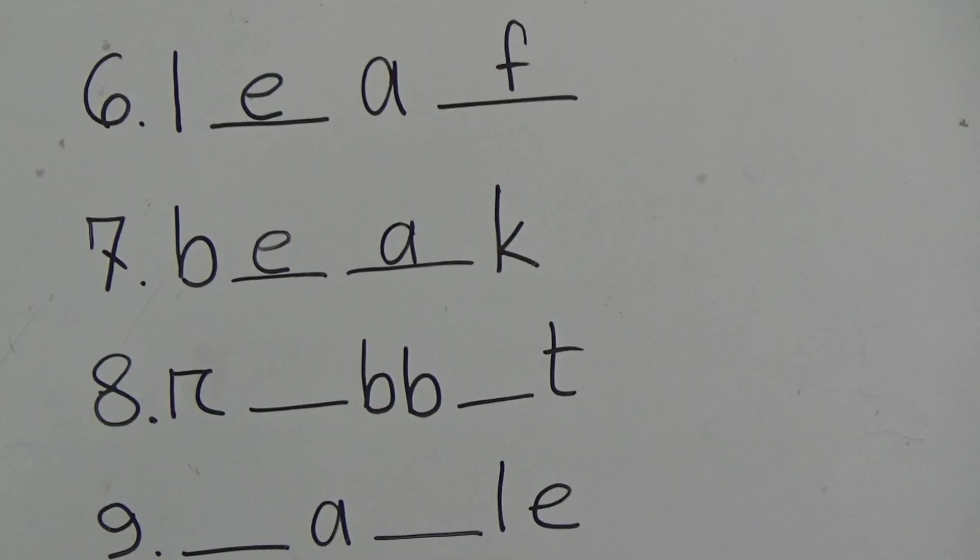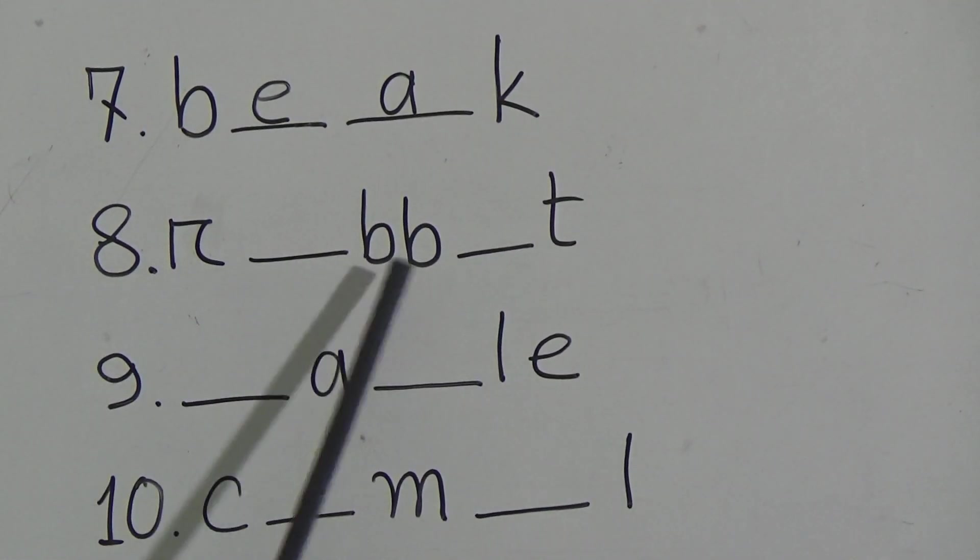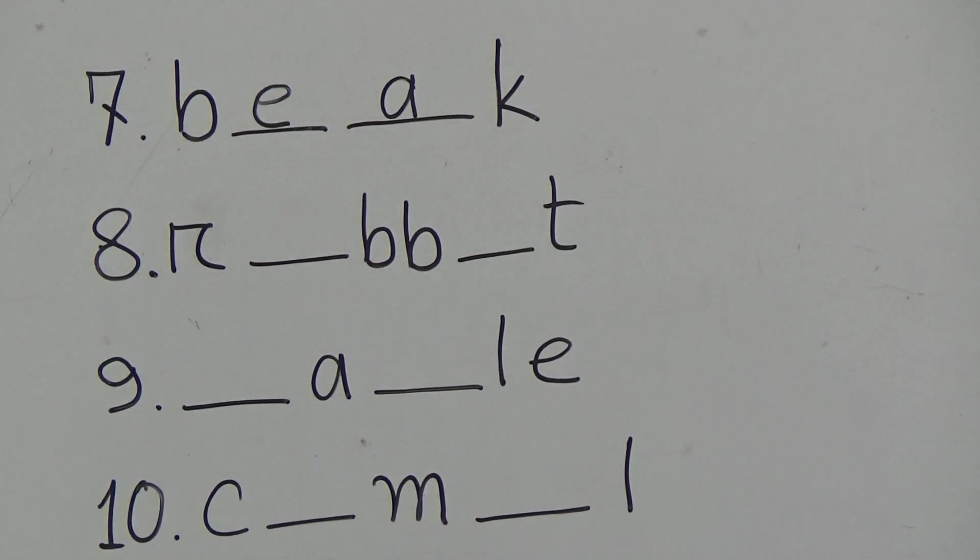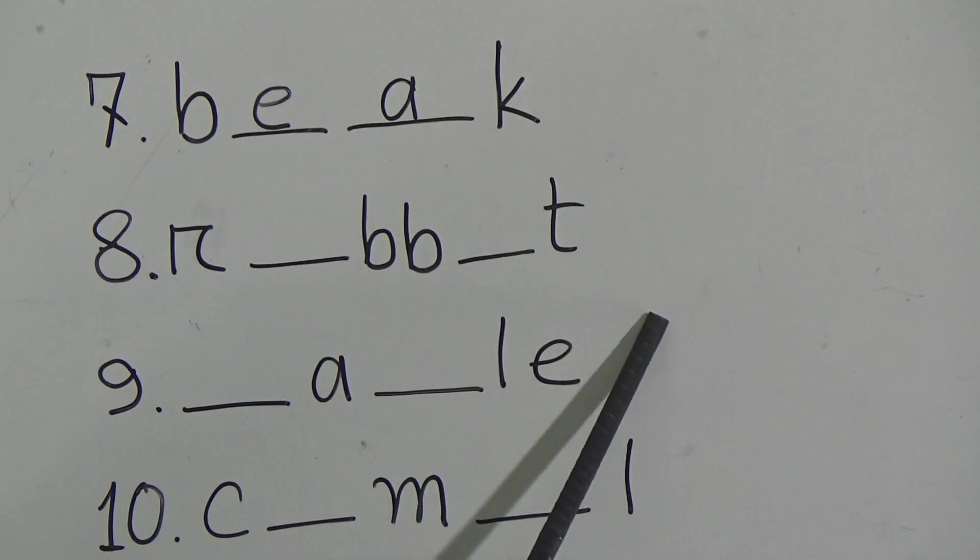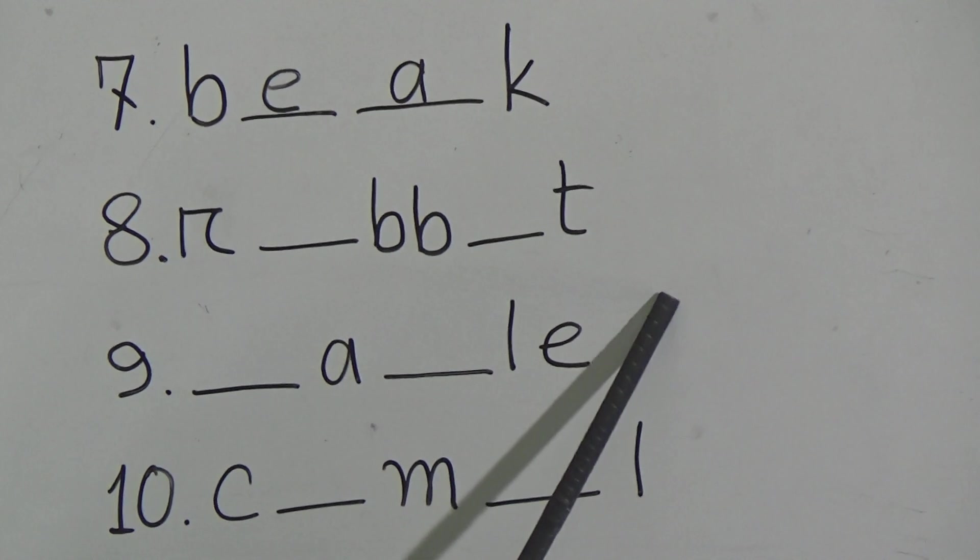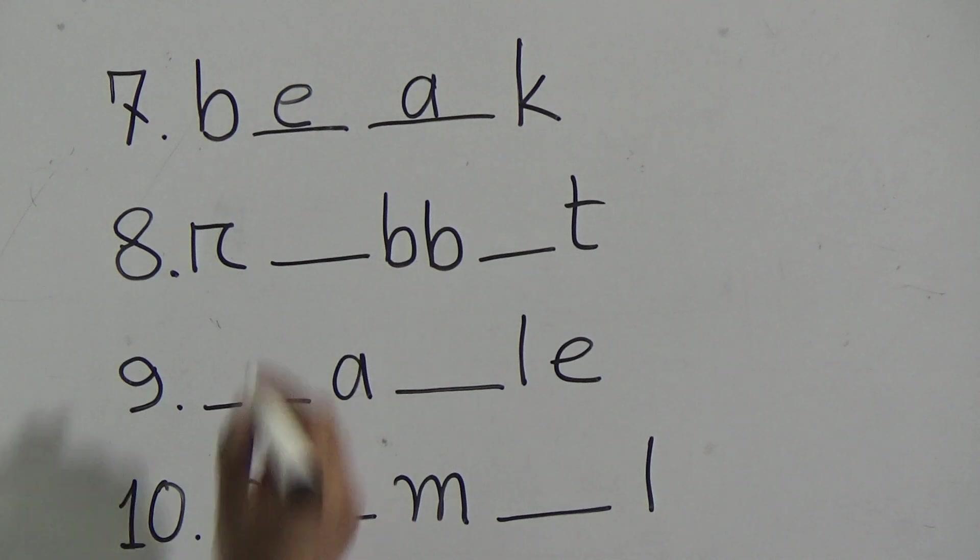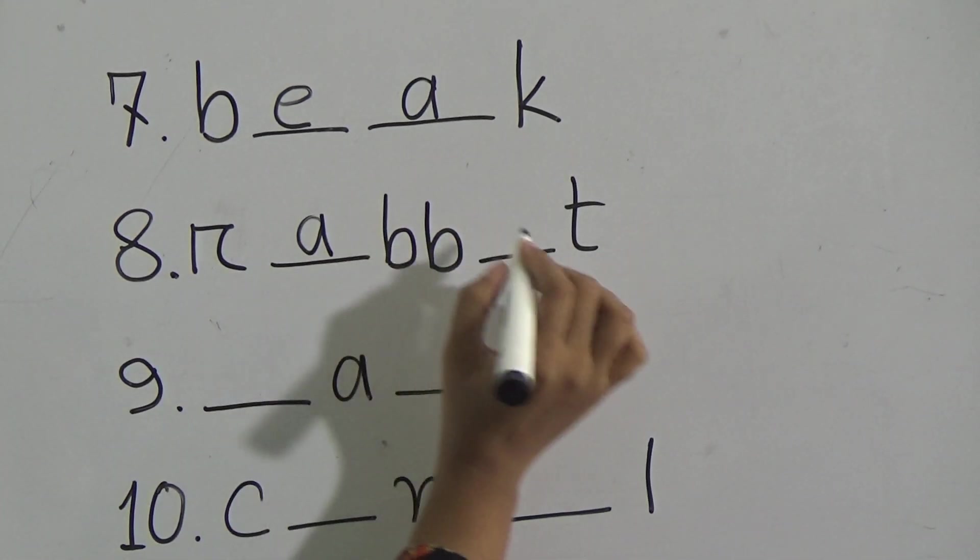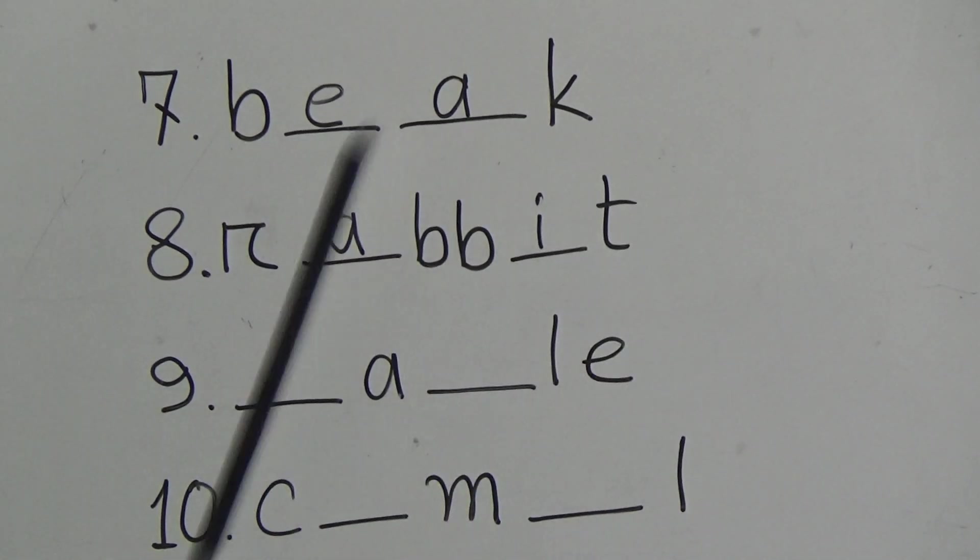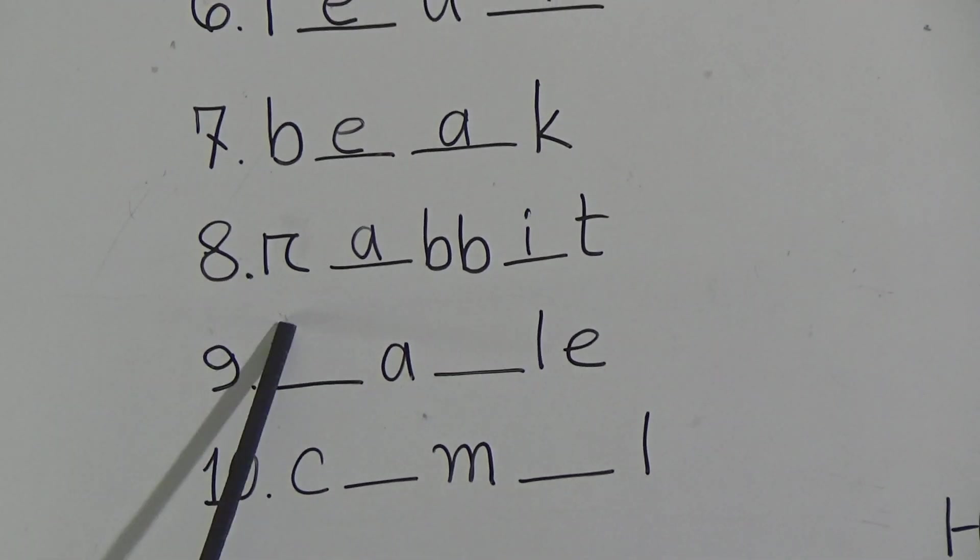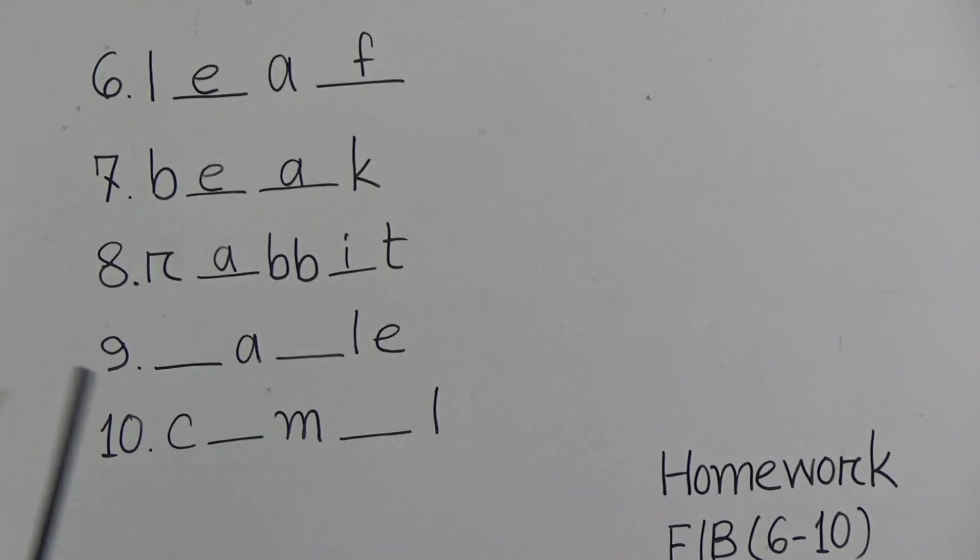Now come to number eight: R gap A B-B gap I T. Students, guess the word. This is also a name of an animal. Can you guess the word? Okay, the word is rabbit. Spell with me: R-A-B-B-I-T, rabbit. So the word is rabbit and the spelling is R-A-B-B-I-T, rabbit.